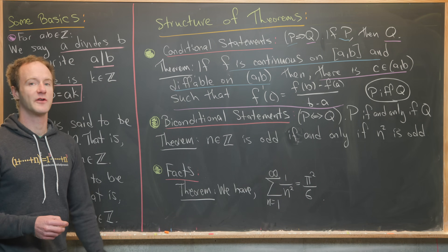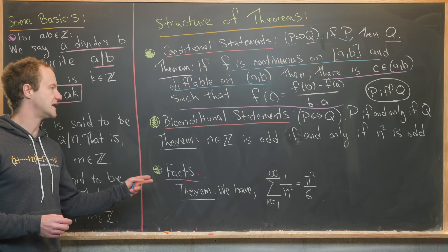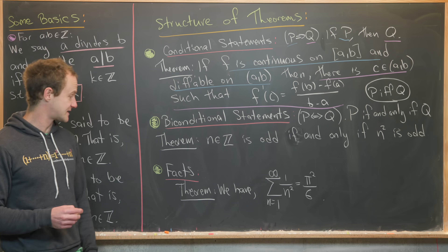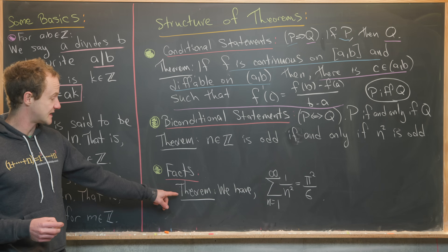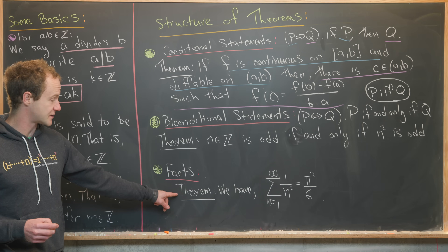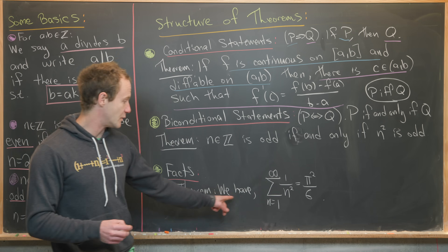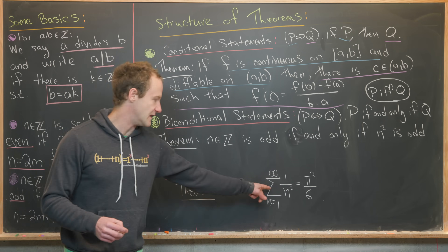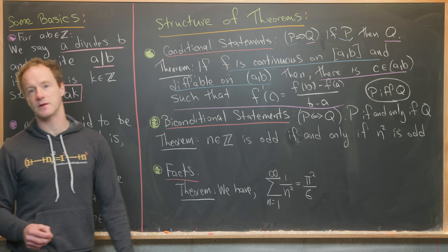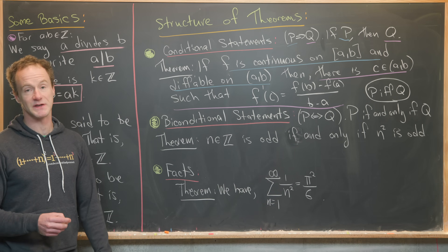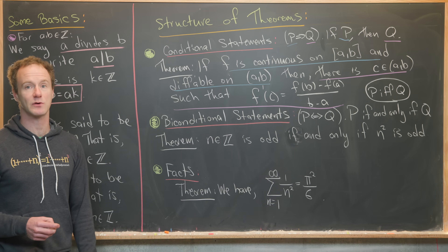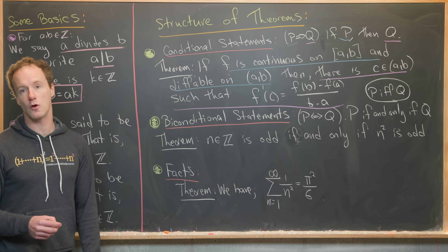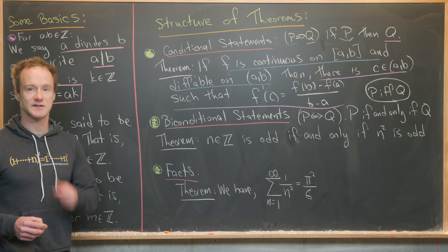Finally, there are theorems which are not conditional or biconditional statements — they're really just facts. Here's an example: the famous Basel problem. The sum of the reciprocals of the squares equals pi squared over six.